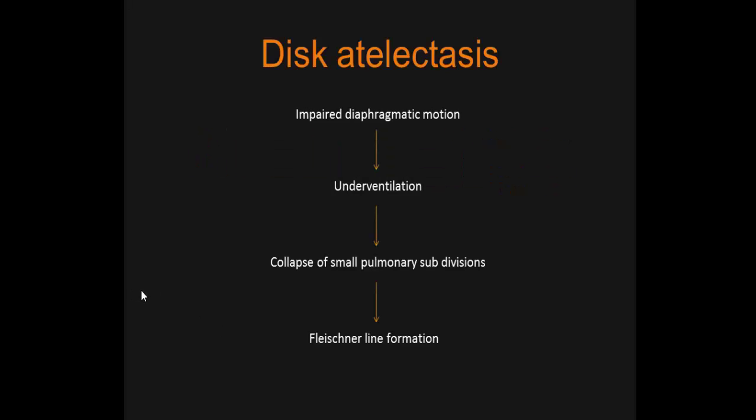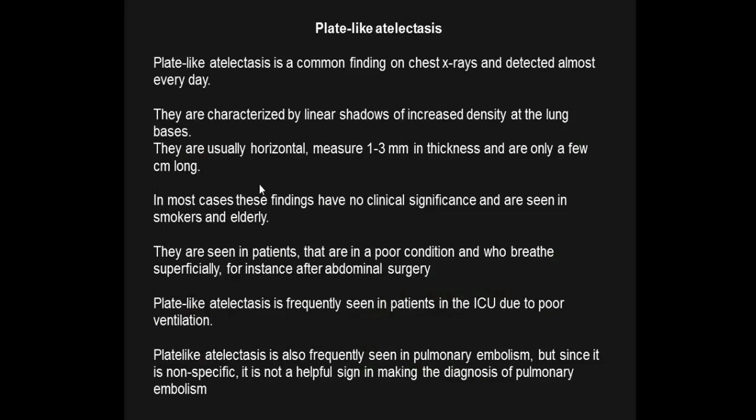Discoid or plate-like atelectasis: impaired diaphragmatic motion leads to underventilation, collapse of small pulmonary subdivisions, and Fleischer line formation. Examples show atypical linear transverse markings at the lower lung bases. Plate-like atelectasis is a common finding detected on X-ray almost every day, characterized by linear shadows of increased density at the lung bases.